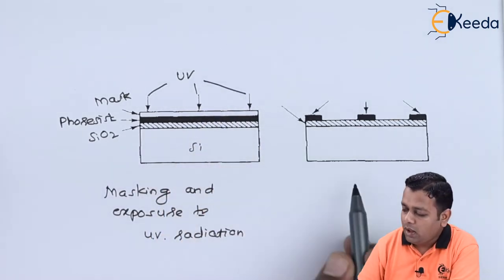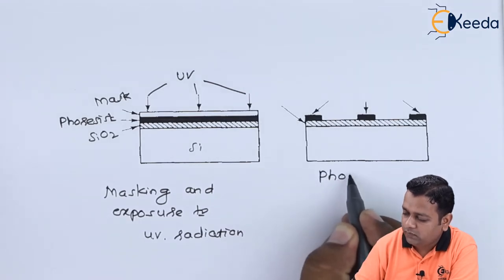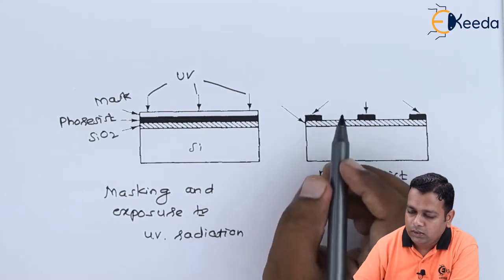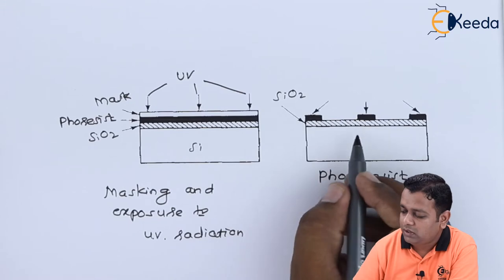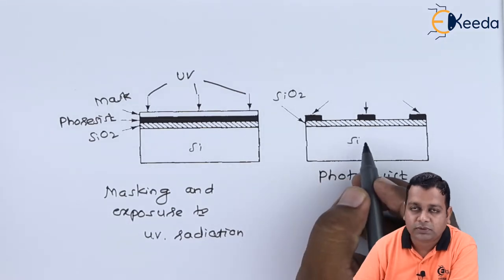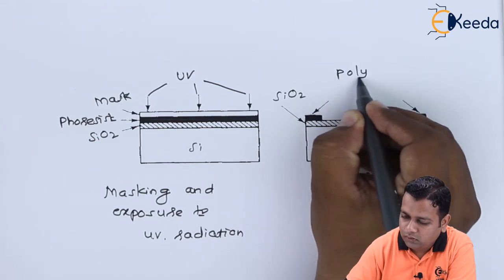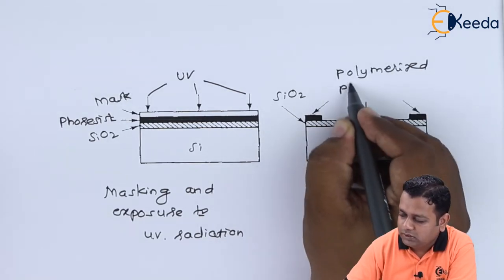Now at the second diagram we see here the photoresist. Now here we have the SiO2 layer shown as before the shaded one. This is the silicon substrate chip. Whereas we have here polymerized photoresist.